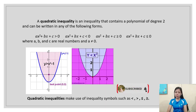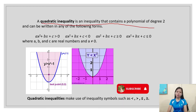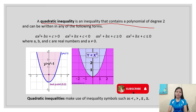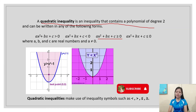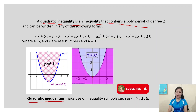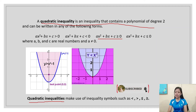So I hope you understand quadratic inequality. Again, a quadratic inequality is an inequality that contains a polynomial of degree 2 and can be written in any of the following forms: ax² + bx + c > 0, ax² + bx + c < 0, ax² + bx + c ≥ 0, and ax² + bx + c ≤ 0. Quadratic inequalities make use of inequality symbols such as less than, greater than, greater than or equal, and less than or equal.